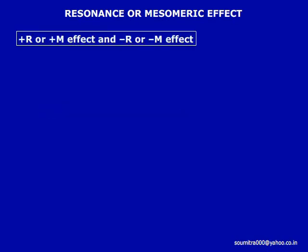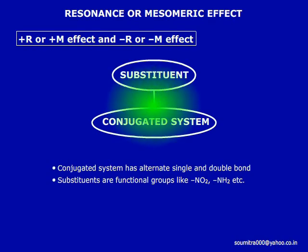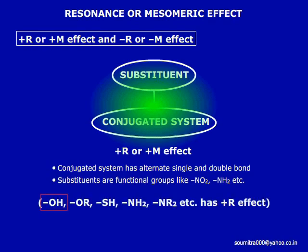When a substituent of a conjugated system increases the electron density in the entire molecule by a delocalization mechanism, it is called the +R or +M effect. The OH group, OR group, SH group, NH2 group, and NR2 groups fall under this category.